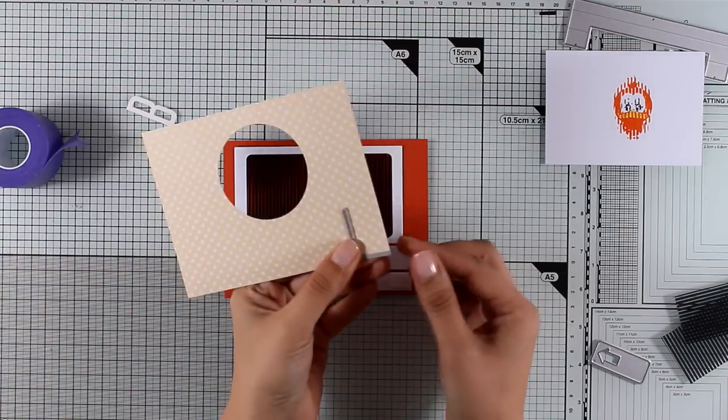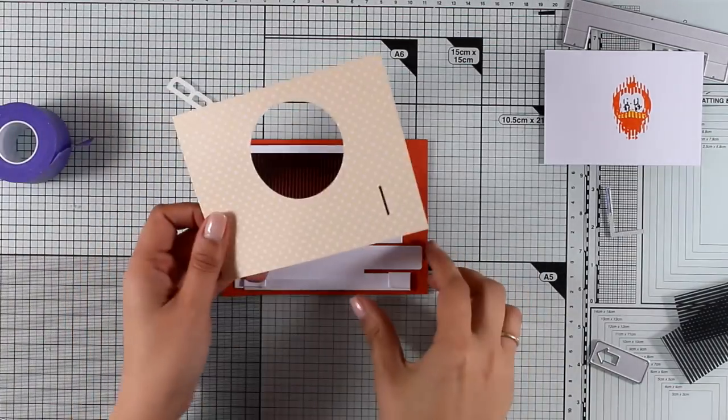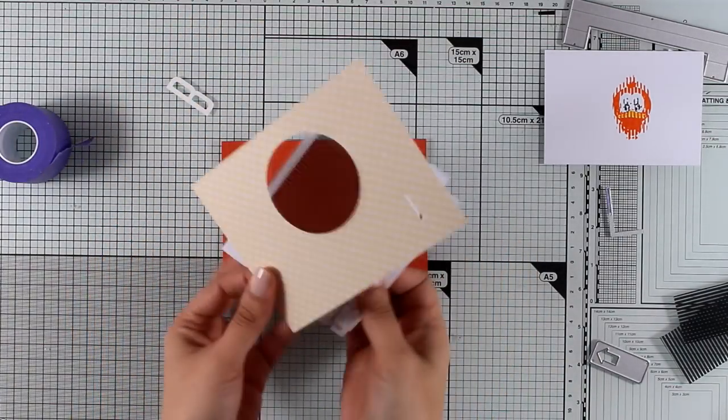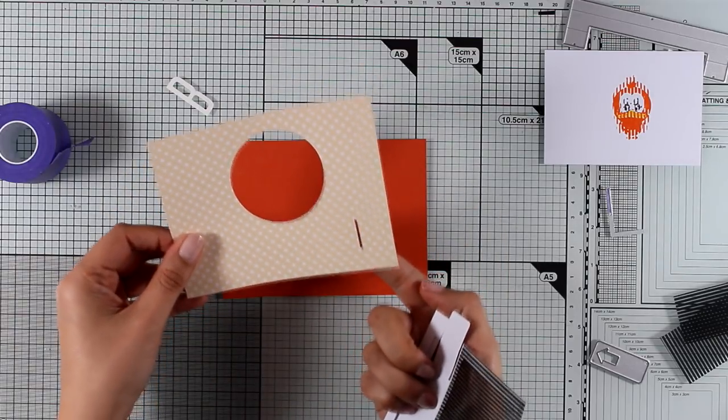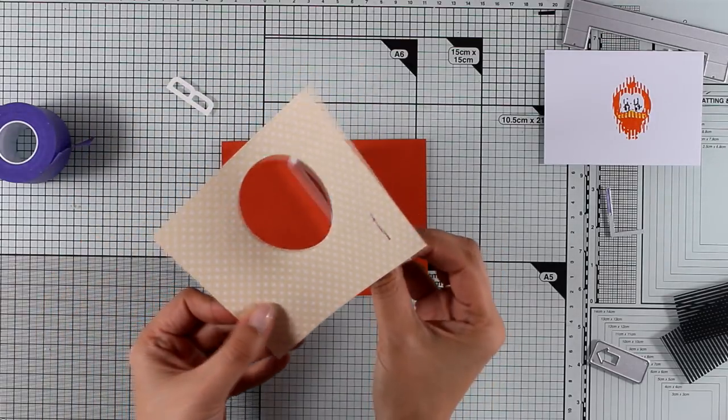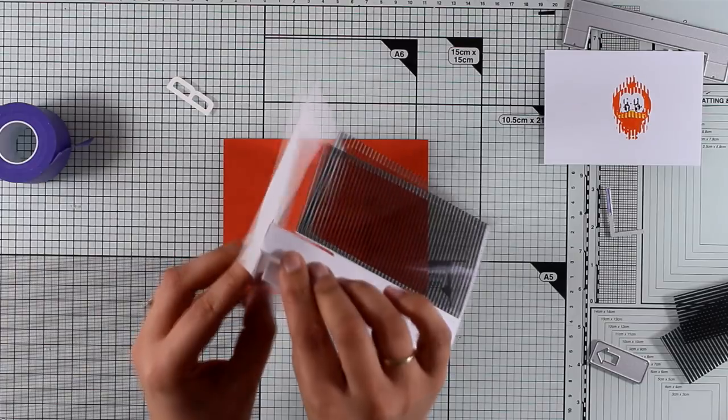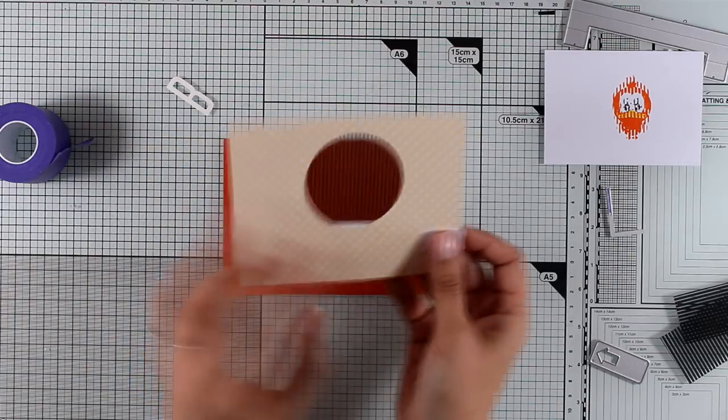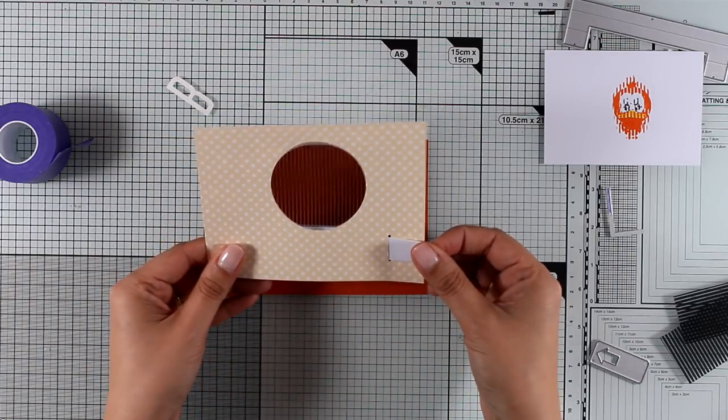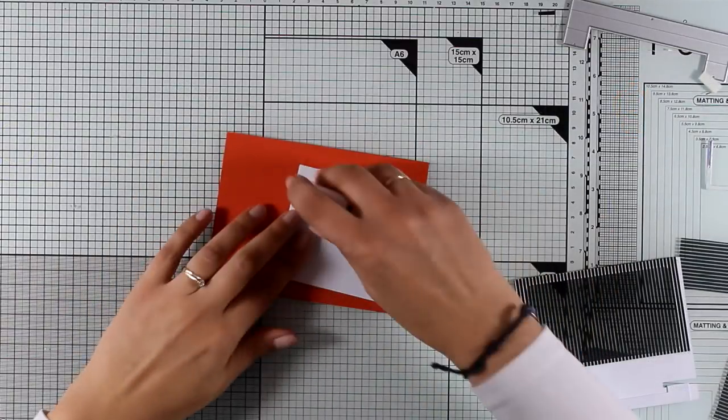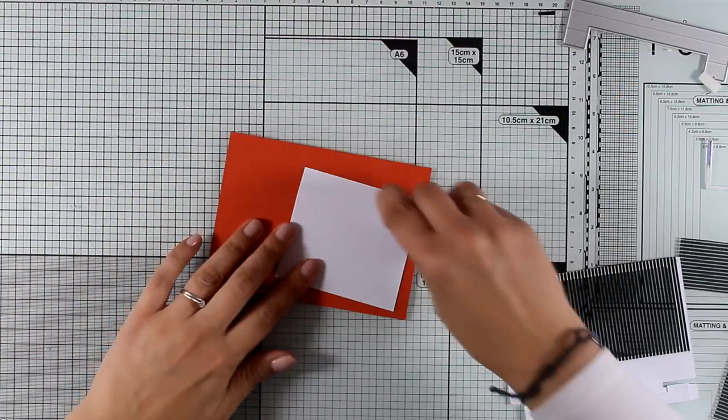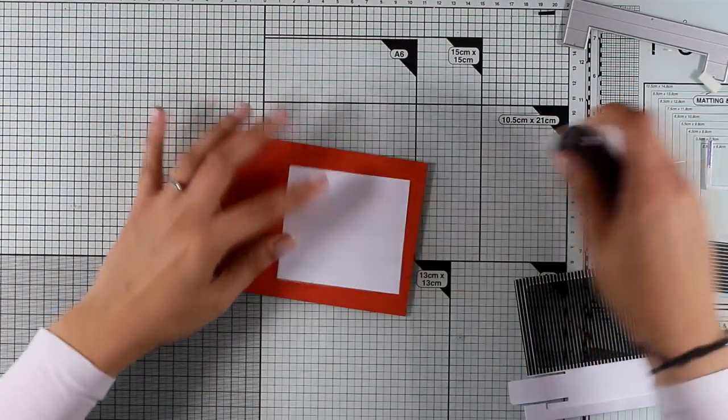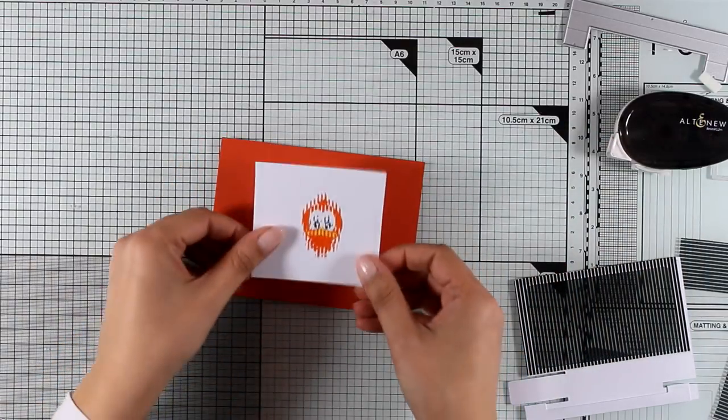I've also used a circle die to cut out a little window. I also used one of the dies from the same slider set to cut out this tiny little slit, and this is where you can fit inside that little tab. I have a standard card size here that I created from orange cardstock.